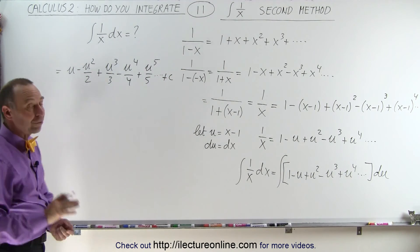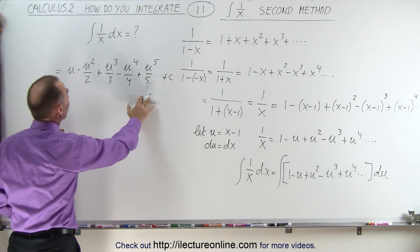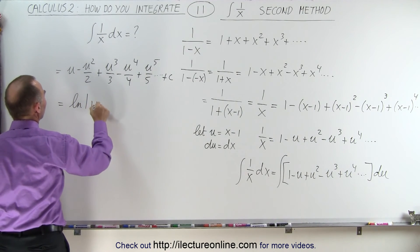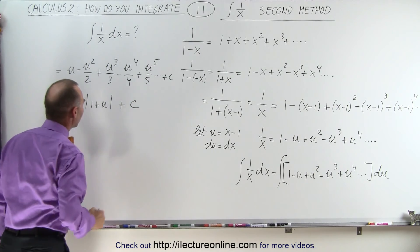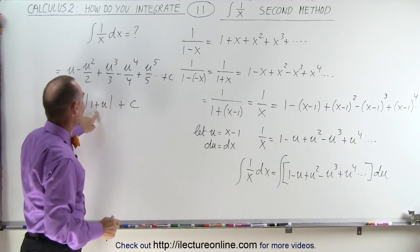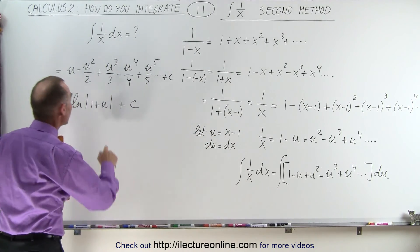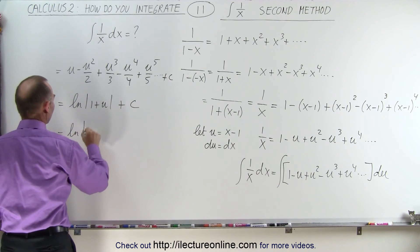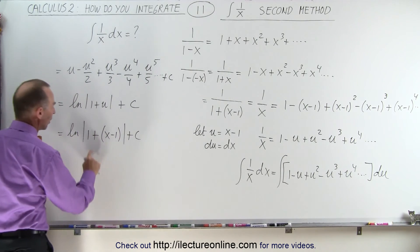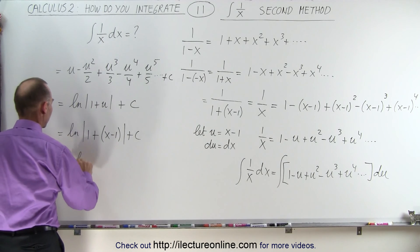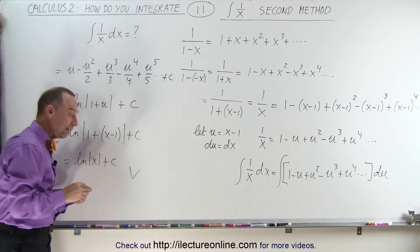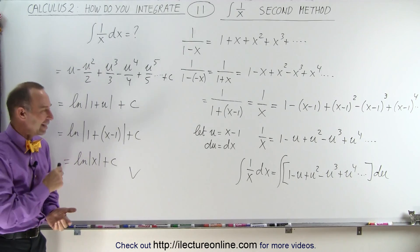Now we have to recognize that this is the power series equivalent of the natural log of 1 plus u. So this can be written as the natural log of 1 plus u plus a constant of integration. Since u is equal to x minus 1, we replace u by x minus 1, giving the natural log of 1 plus (x minus 1), which simplifies to the natural log of x plus a constant of integration — which is exactly the integral of 1 over x dx. And that's how it's done.